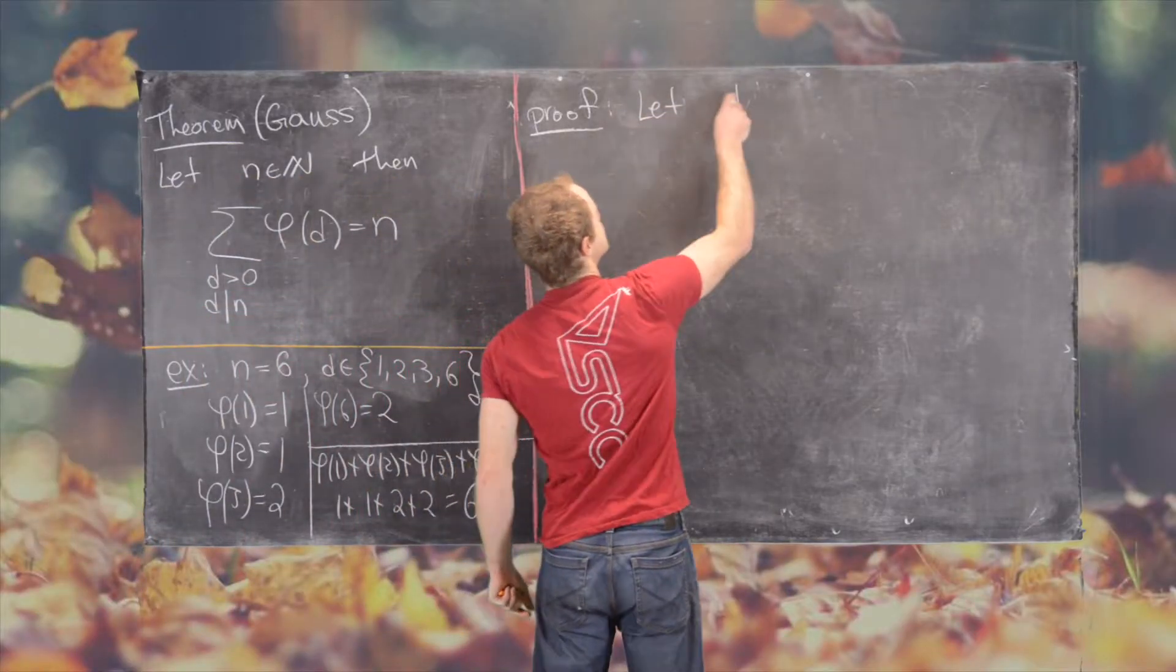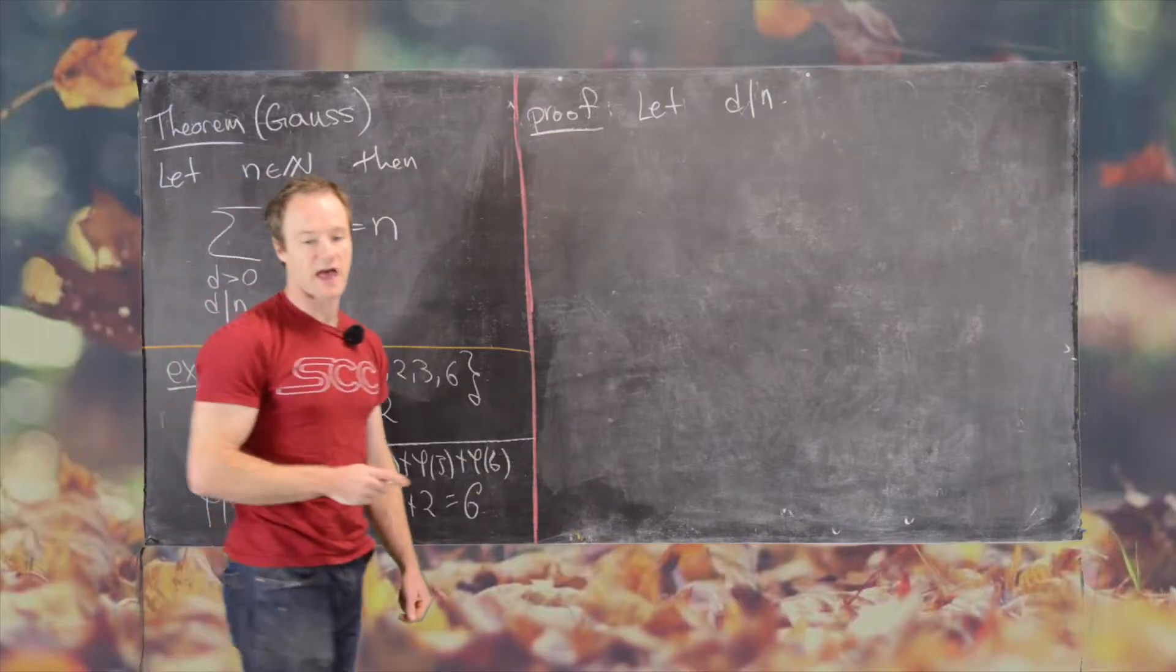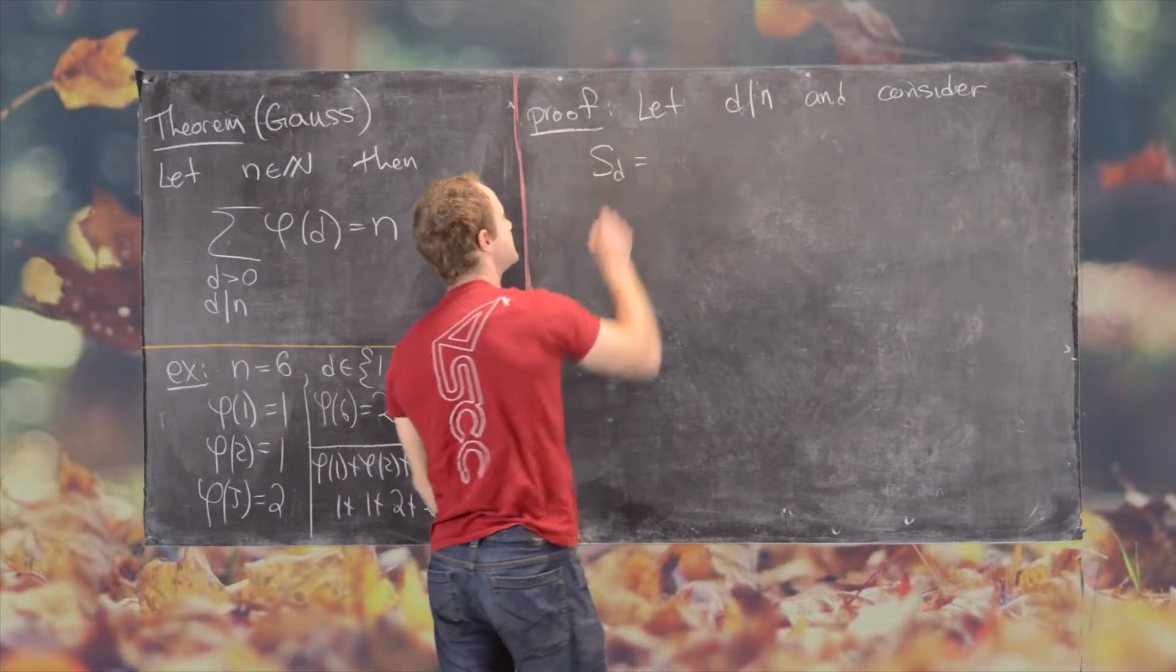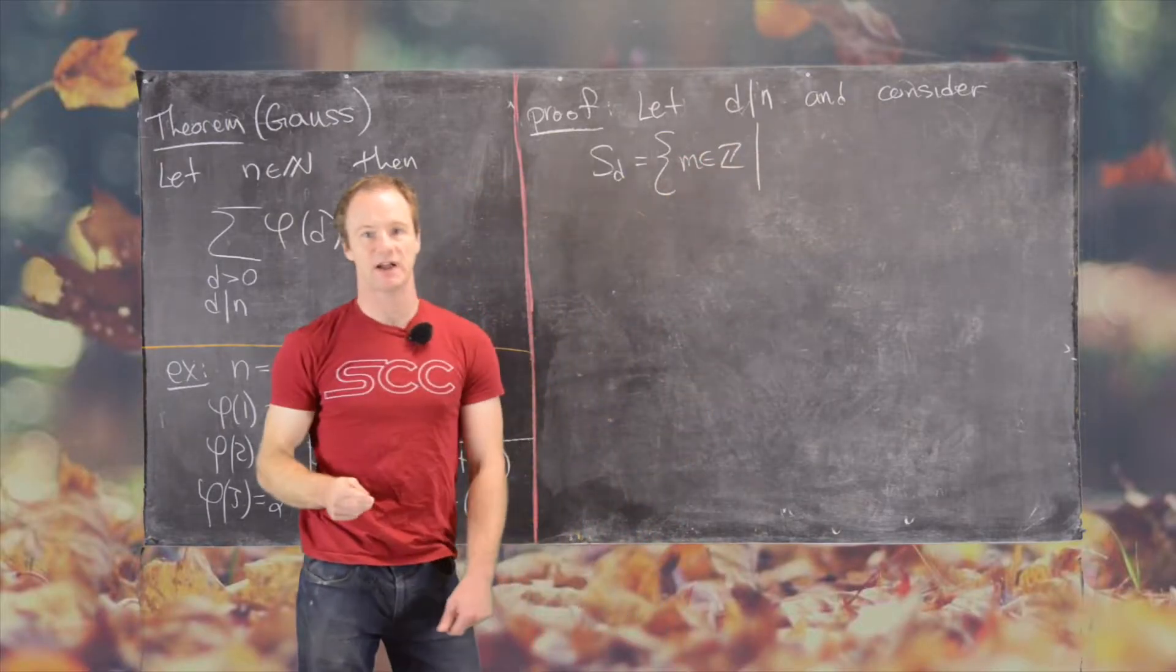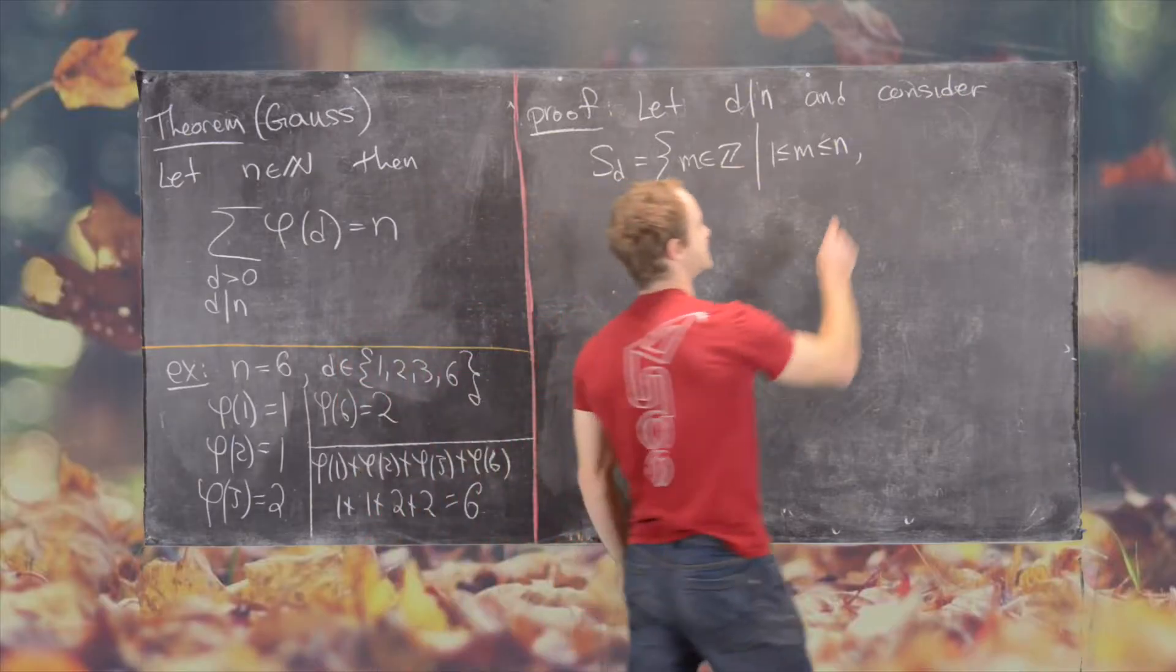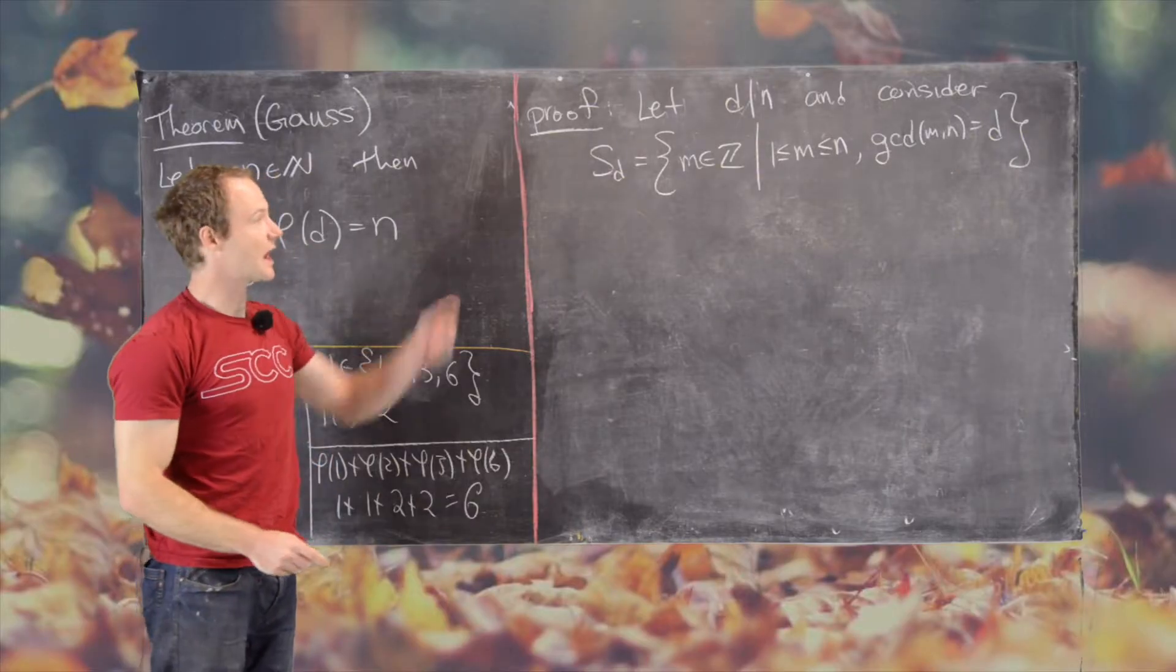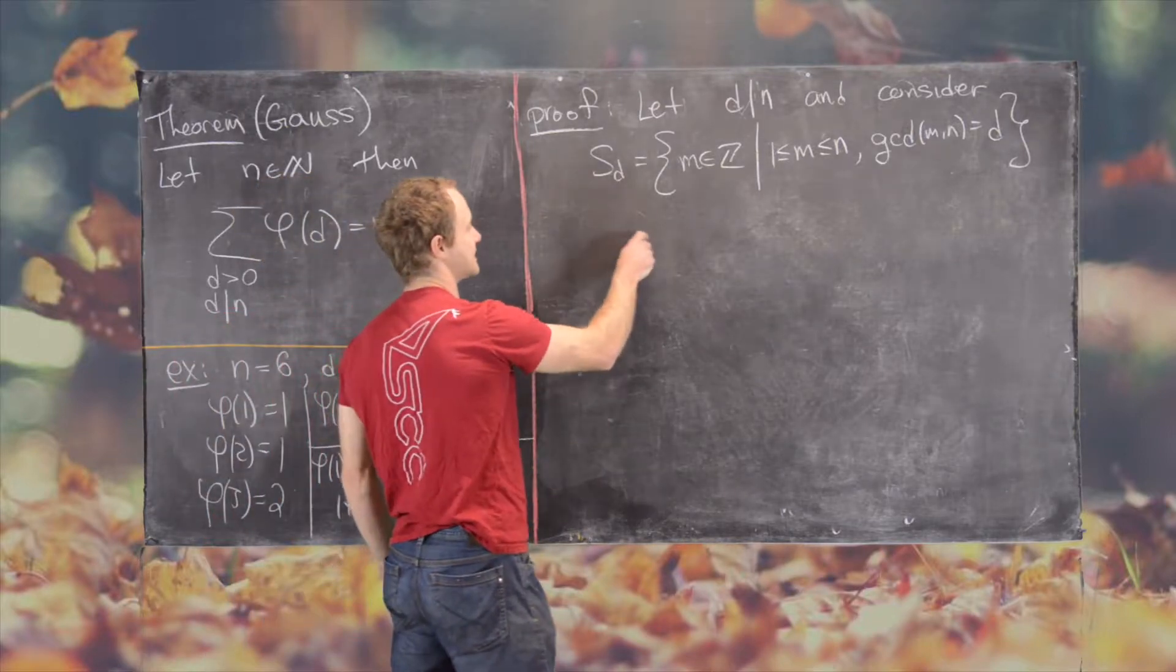So let's let D be a divisor of n. We're going to assume that it's a natural number, so we won't write that at all of the steps. And then consider the following set. We'll call it S sub D. And so this will be all integers M. And those integers satisfy two rules. First, they live between 1 and n. And the second is the GCD of M and n equals D. So now we're going to rewrite this set a few ways in order to make it work for our needs.